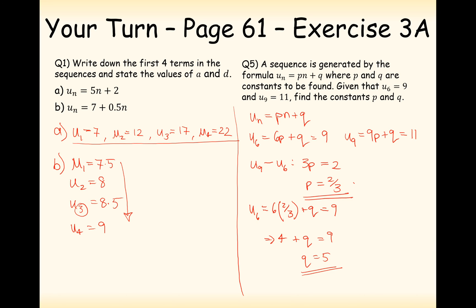A classic way of incorporating simultaneous equations into an arithmetic sequence question is to give you two terms in the sequence and ask you to work out the a value and the d value. This is the first exercise in chapter 3, so pause the video and try a couple of these questions out. Thanks for watching.